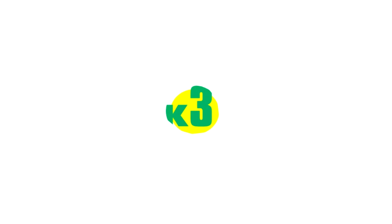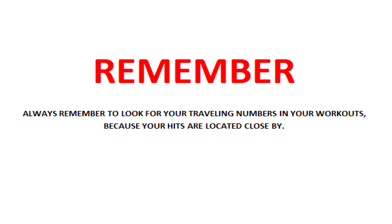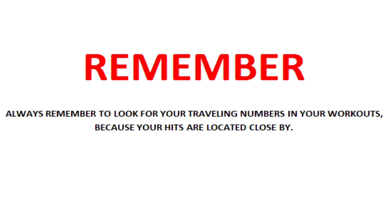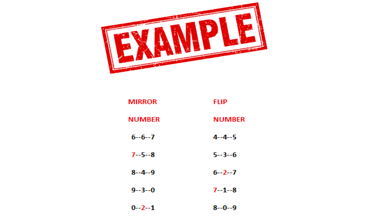The next step is to apply the date sum from January the 31st into your February the 1st mirror and flip numbers workout. Always remember to look for your traveling numbers in your workouts because your hits are located close by. The date sum for these examples is 2 and 7. Keep in mind everything from episodes 9 and 10 because you are about to see why traveling numbers and date sums are very important.